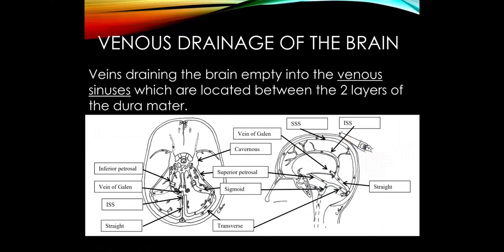Now let's talk about venous drainage of the brain. The veins empty into venous sinuses, which are located between the two layers of the dura. There is a reflection of the dura called the falx cerebri, visible in this labeled drawing.